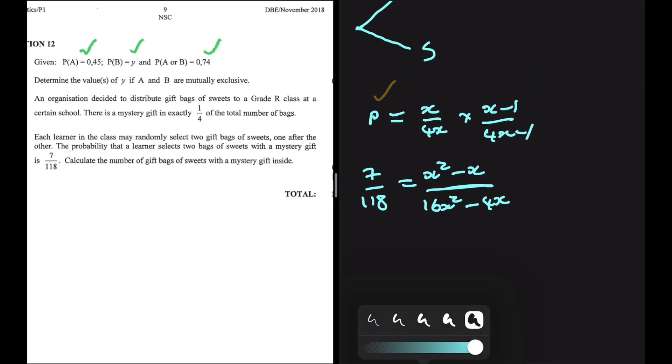If we do that, we're going to get X squared minus X divided by 16X squared minus 4X. We can go ahead and cross-multiply. We're going to get 122X squared minus 28X being equals to 118X squared minus 118X.